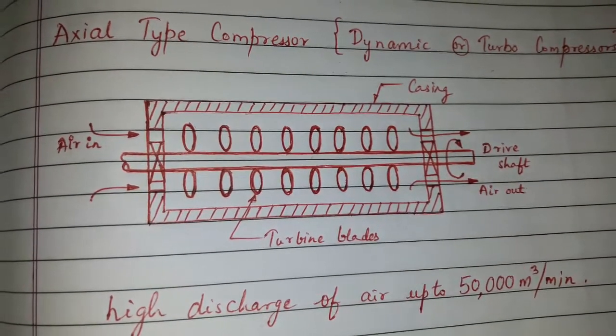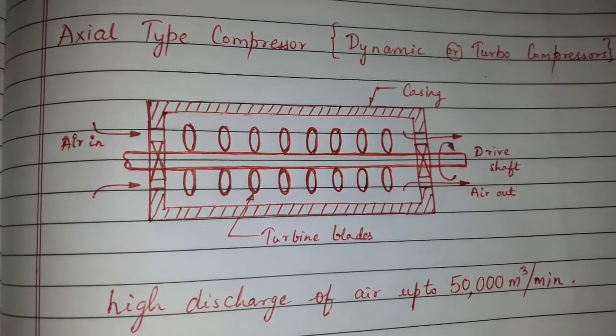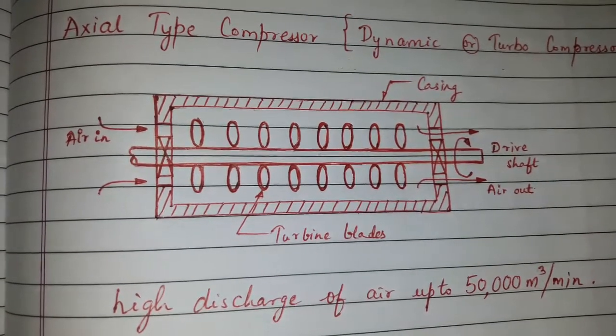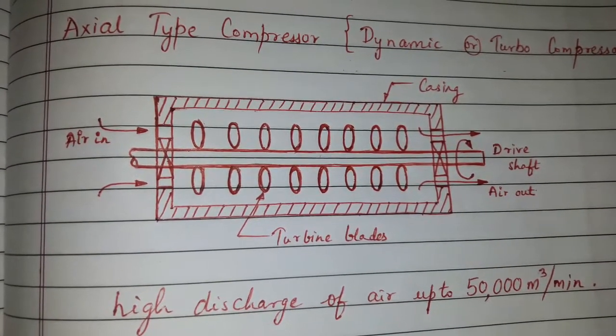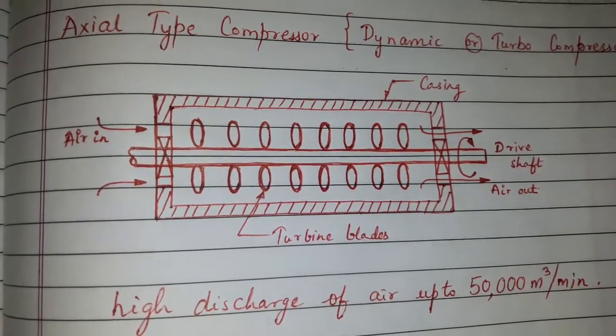It is used for high discharge of air up to 50,000 meter cube per minute. Pressure of air is very minor, around 1 bar.